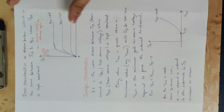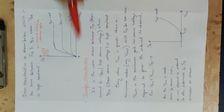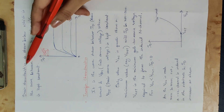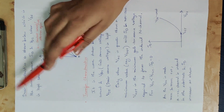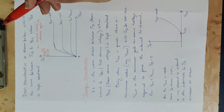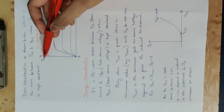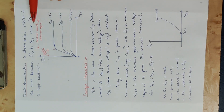We need to learn drain characteristics, also called output characteristics, of the E-MOSFET. We have two terms: drain current ID and drain-source voltage VDS. This is the curve drawn when VGS, the gate-source voltage, is kept constant.